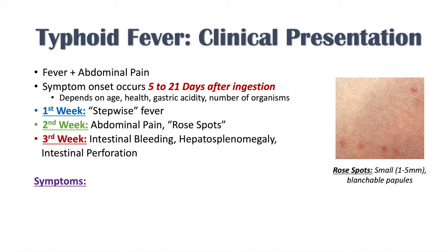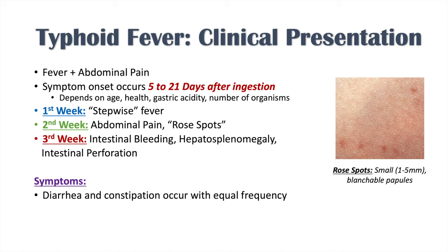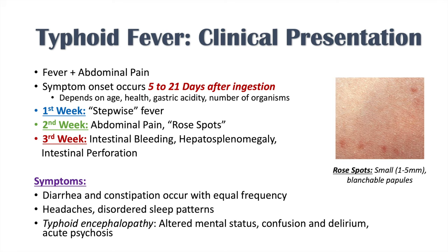Other symptoms of typhoid fever include diarrhea or constipation, which occur with roughly equal frequency — about 50% each. You can also see headaches and disordered sleep patterns. Additionally, typhoid encephalopathy can occur, causing altered mental status, confusion, delirium, and even acute psychosis.